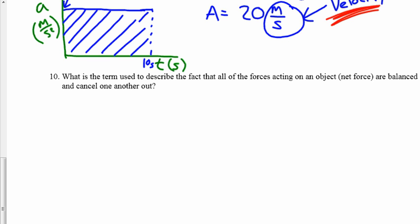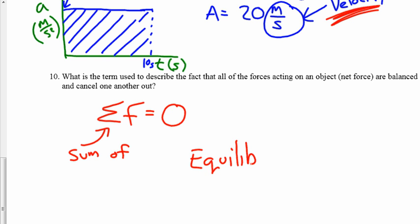The last question we're going to address in this first part of this video asks us about a vocab word. They're asking us what the term used to describe the fact that all the forces acting on an object are balanced and cancel one another out. So in other words, the sum of all the forces is zero. That being the Greek letter sigma, meaning the sum of all the forces equals zero. There's a special vocab word that we've learned, and it is known as equilibrium.